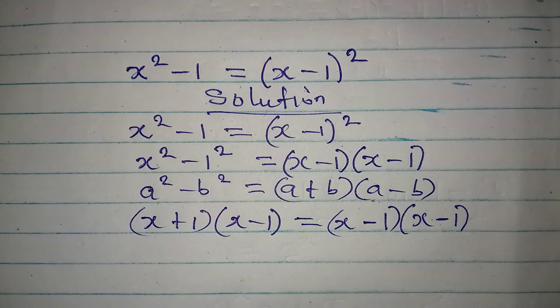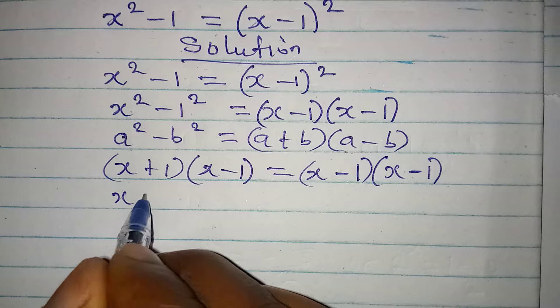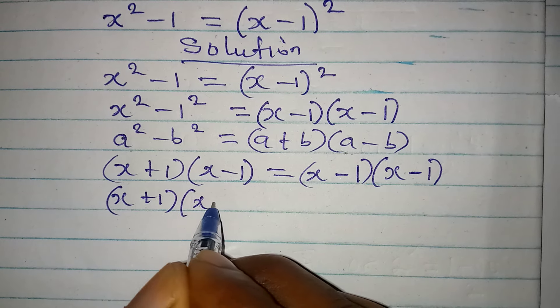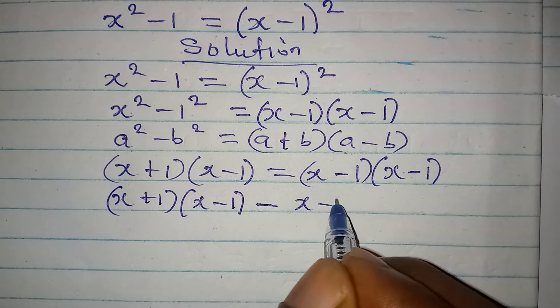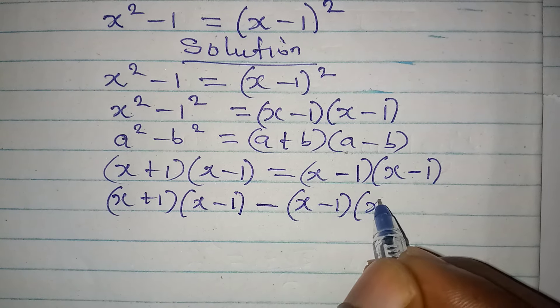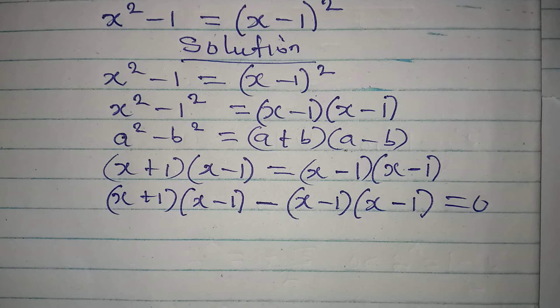What if I bring everything to the same side? That means I will have x plus 1 into x minus 1, then minus x minus 1 into x minus 1. This is equal to 0.